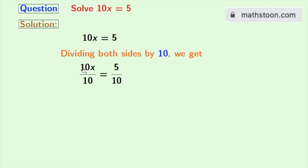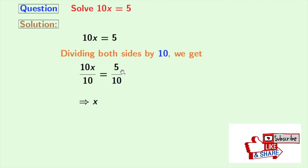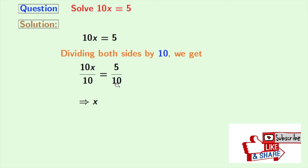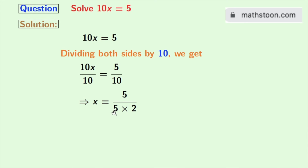On the left hand side, 10 gets cancelled and we are left with x. On the right hand side, we have 10 as the denominator, and we will rewrite 10 as 5 times 2. So here, 5 gets cancelled and we are left with 1 by 2.